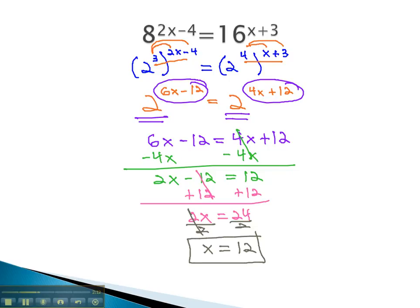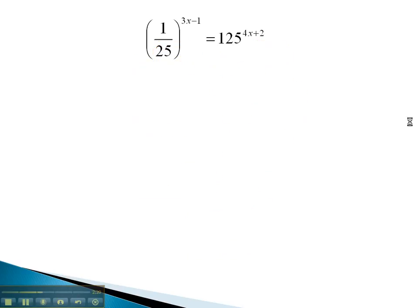Let's take a look at another example where we have to distribute as we work to get a common base on both sides, so we can set the exponents equal. In this problem, you might notice we can write both with a common base of 5.